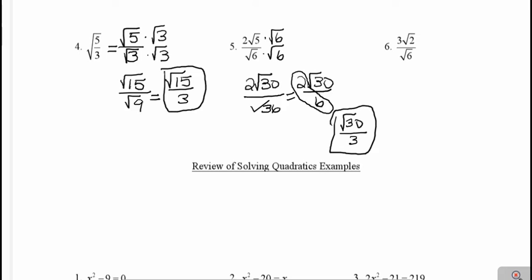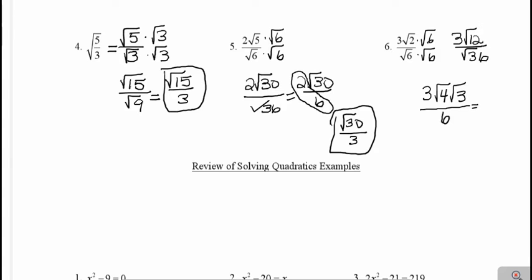In example 6, let's multiply both the top and the bottom by the square root of 6 to get rid of that square root in the denominator. So then I would get 3 square root 12 on top over the square root of 36. Now I can simplify the square root of 12 on top, so that would be the same thing as 3 times square root 4 times square root 3. And then I can simplify the square root of 36 on the bottom to just 6. The square root of 4 is just 2, so that would be 3 times 2, which is 6 square root 3 on top. Then I have 6 on the bottom, and 6 over 6 just becomes 1 square root 3. So that would be the final answer for example 6. Those are a little bit trickier — they may take more practice, but the more practice you get with them, the more confident you should feel.